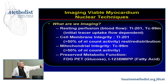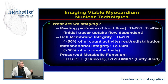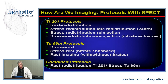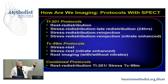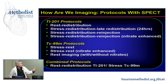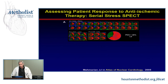With PET imaging using FDG, we look at glucose uptake — what a starving myocardium utilizes to maintain energy. For thallium protocols, we look at rest redistribution, stress redistribution reinjection imaging, and nitrate-enhanced imaging, because nitrates improve subendocardial blood flow and help improve perfusion to underperfused areas. Technetium protocols include stress-rest, nitrate-enhanced, and rest imaging with or without nitrates, as well as combined protocols.